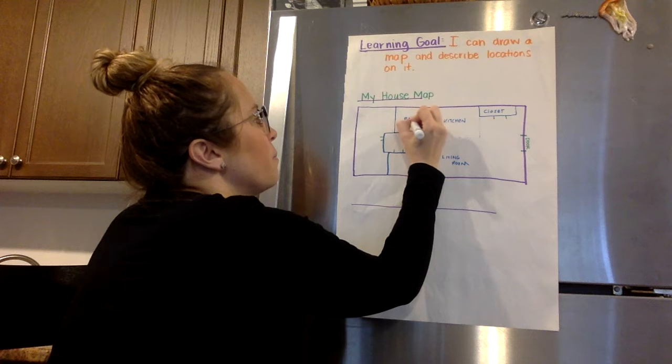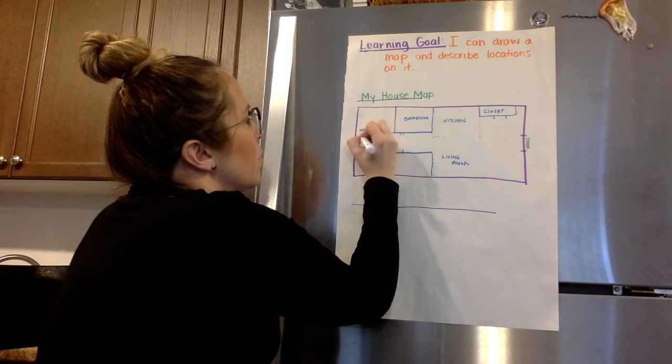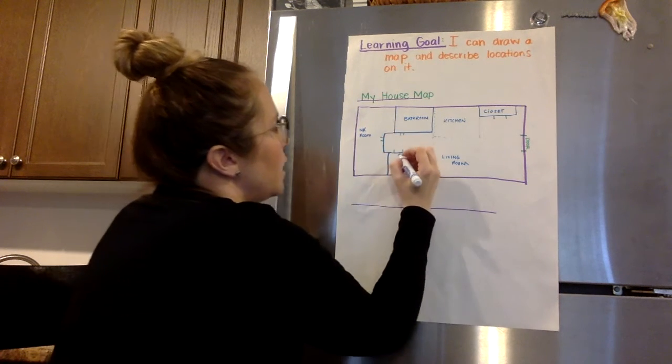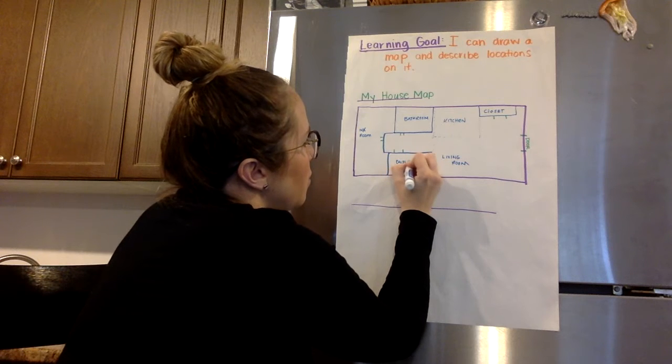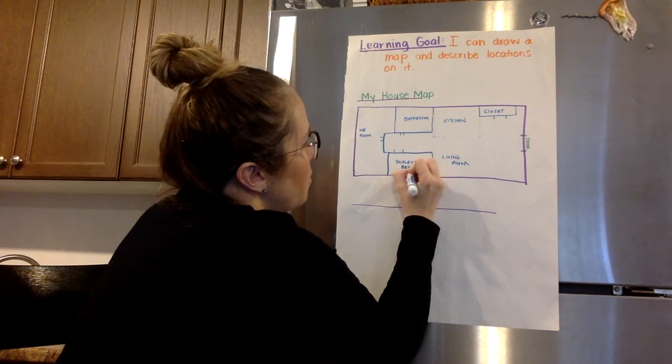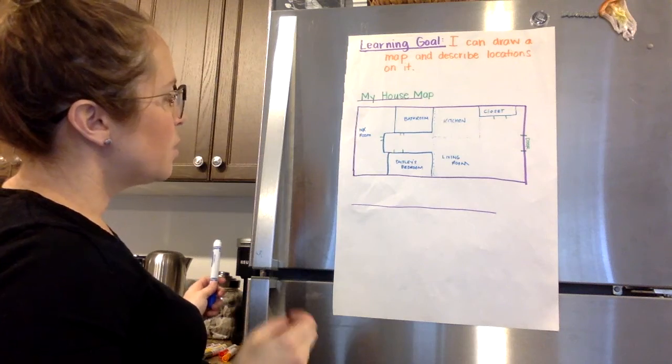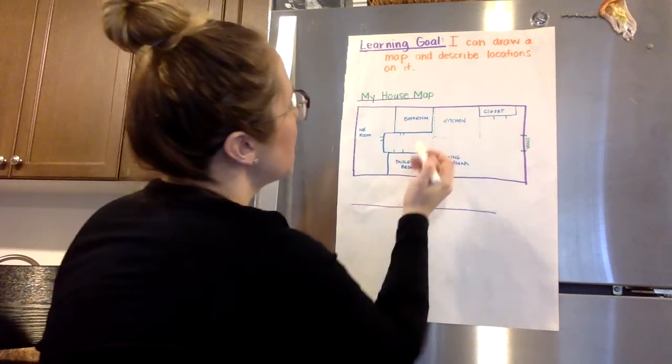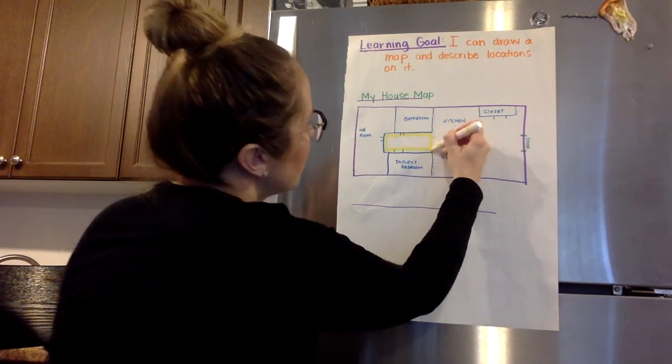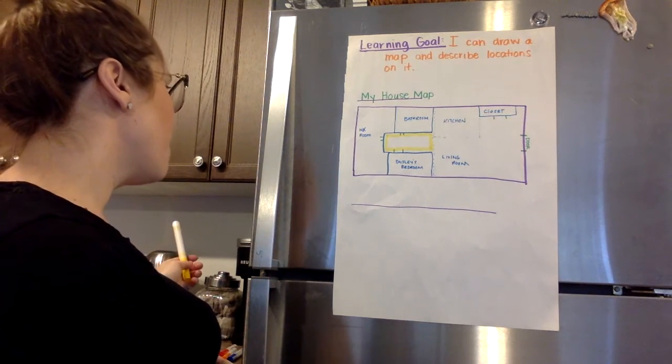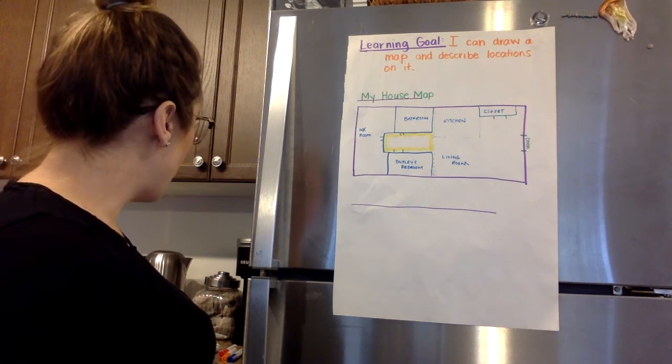Okay, so this is a bathroom. This is my room. And this is Kaisley's bedroom. And what else do I want to do? Maybe I could label this as the hallway. So now I've got a fairly simple map that I've drawn of one floor.